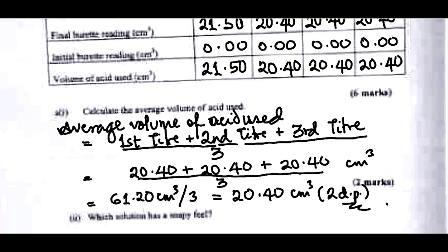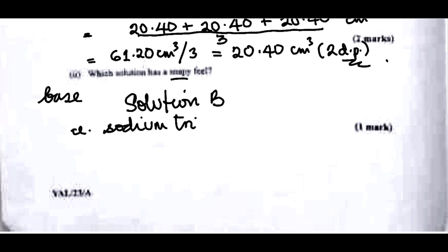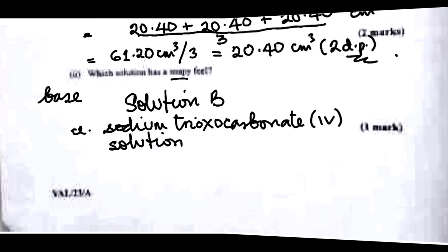The next question asks which solution has a soapy feel. For a solution to have a soapy feel, it must be a base — that is one of the physical properties of bases. Of the two solutions, the base is sodium trioxocarbonate(IV), so the answer is solution B — that is Na₂CO₃. You earn one mark there, giving us nine marks in total so far.